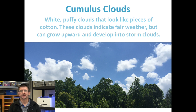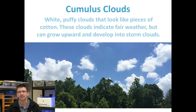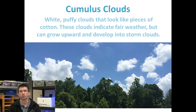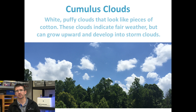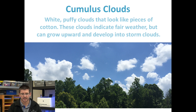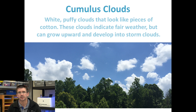Cumulus clouds are the big, white, puffy clouds that look like cotton balls in the sky. They're very large clouds — they hold a tremendous amount of water and stretch very high up into the atmosphere, making them a very tall cloud. They do have the potential over time to develop into storm clouds, but as long as the clouds are nice and white, it's usually an indicator of a nice day.